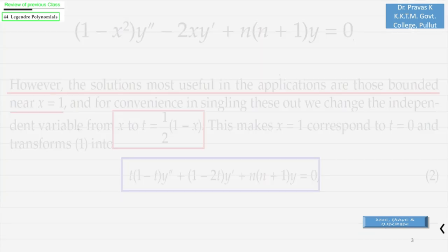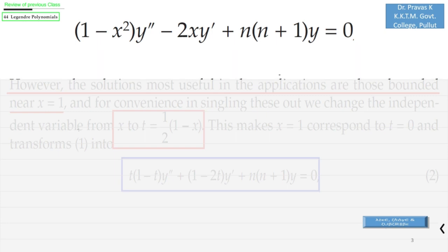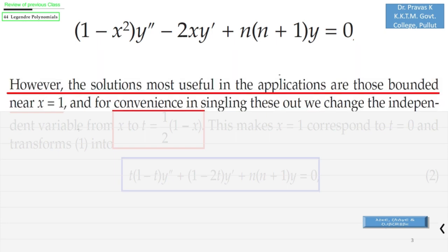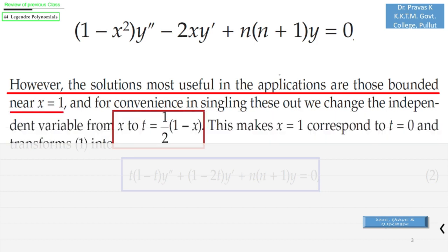Now we can see that the solutions most useful in applications are those bounded near x = 1. So what we do is bring a change in the independent variable from x to t by setting t = (1-x)/2, so that x = 1 corresponds to t = 0.